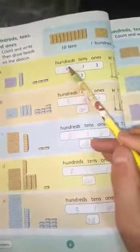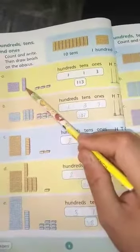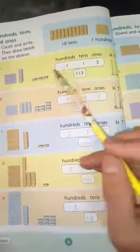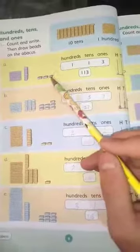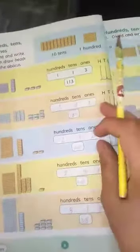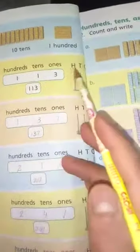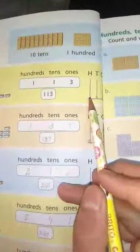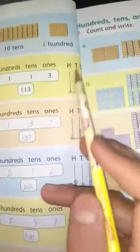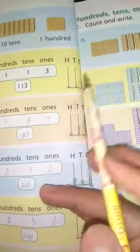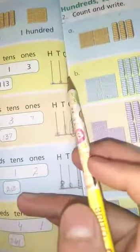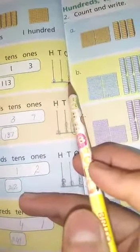Hundred kitnay haemne pattas 1. Tens kitnay? Here tens be one. And ones kitnay haemints? 1, 2, 3. Ab haem abacus mein beads draw karenge. We have these hundred, how many tens have this? 1 bead draw. How many tens are? And how many 1 beads are? 3 beads draw.